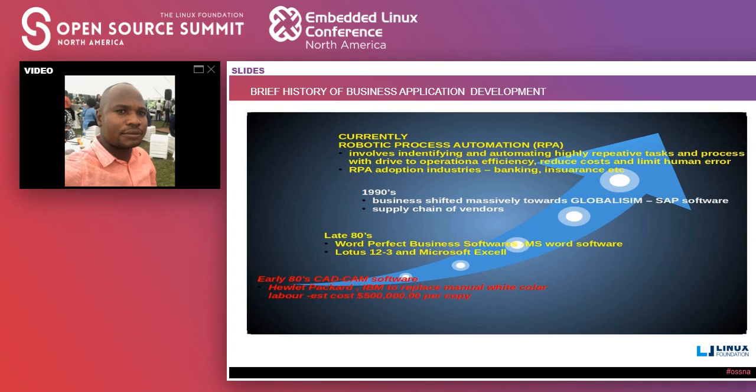In the 1990s we saw SAP software being pioneered, which was mainly used in supply chain and vendor management. Then we move to the current period — robotic process automation — where we see tasks which were being done repetitively being automated. We need to avoid errors in doing business, and robotic process automation improves efficiency, reduces cost, as well as human error.